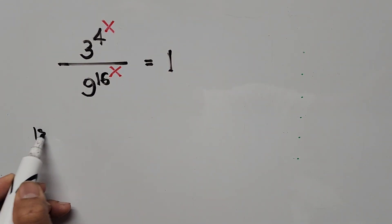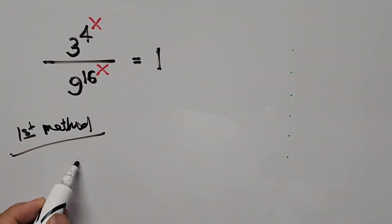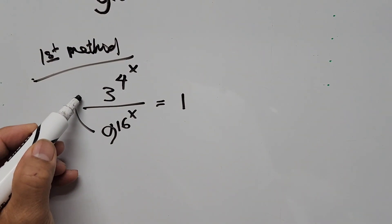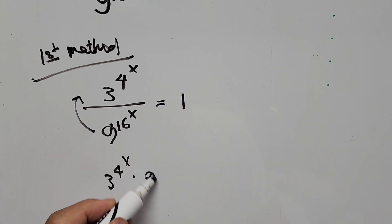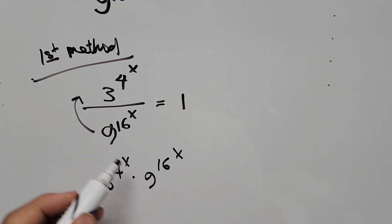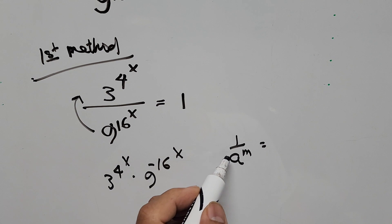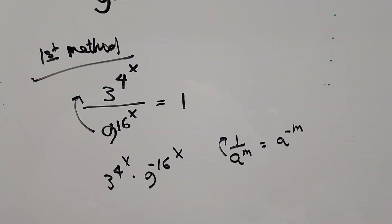We have here our equation: 3 to the power of 4 to the power of x, divided by 9 to the power of 16 to the power of x, equals 1. We're taking the denominator to the numerator, so we have 3 to the power of 4 to the power of x times 9 to the power of 16 to the power of x — and this time the exponent becomes negative. So we have a negative exponent here, and this is equal to 1.